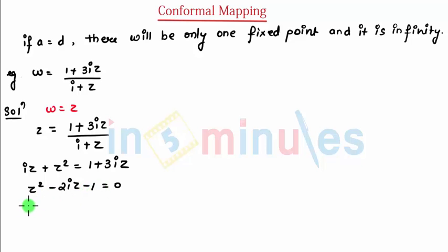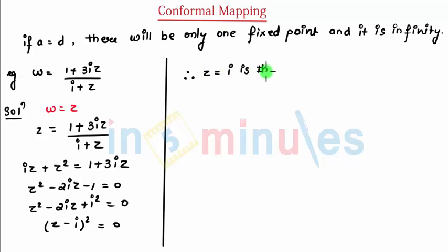Now, once you solve this, see students, z square minus 2iz and minus 1 can be written as plus of i square, that is equal to zero. So I can write this is nothing but z minus i the whole square and that is equal to zero. Therefore, I can say z is equal to i is the only one fixed point of the transformation.